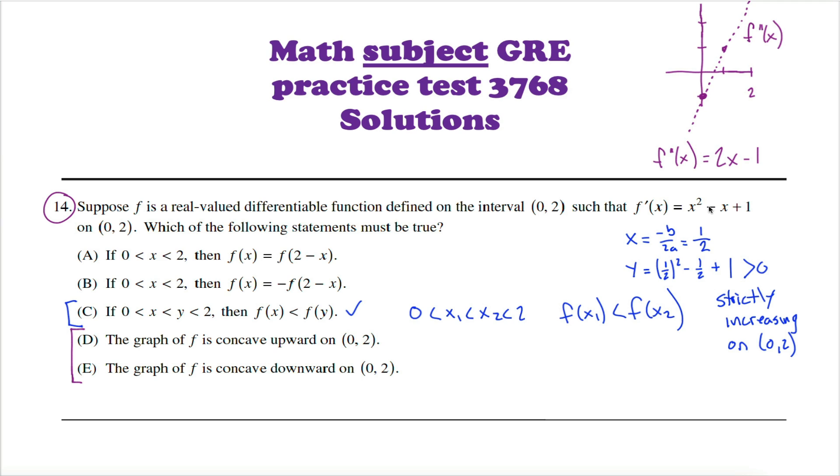Wait, what did we just figure out here? The lowest the derivative ever gets is when the x coordinate is at 1 half. And at that x coordinate, the y coordinate, in other words, the slope of this function, is still positive. If it's positive at the lowest point it ever gets, that means it's always positive. If it's always positive, it's strictly increasing. C is a true statement.